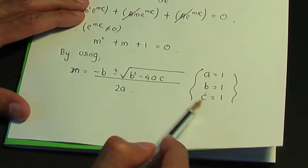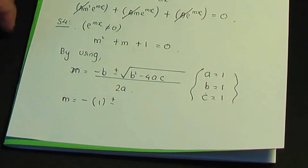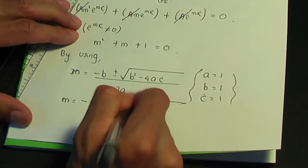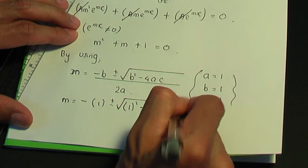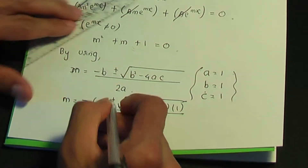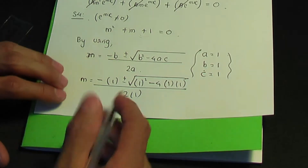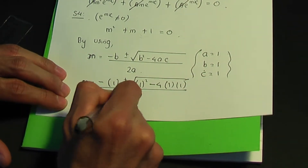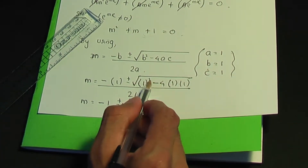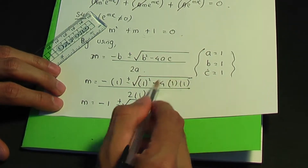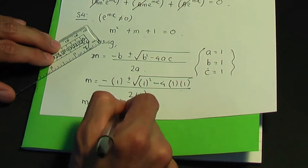Replacing a, b, and c in the quadratic formula: m = (−1 ± √(1² − 4·1·1)) / (2·1). Simplifying, we get m = (−1 ± √(1 − 4)) / 2 = (−1 ± √(−3)) / 2.